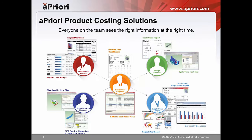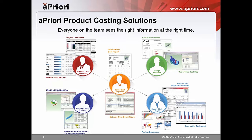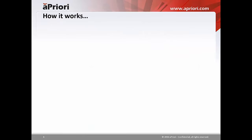aPriori has a product cost management software technology that allows everybody on the team to see the right information at the right time. The types of information a manufacturing engineer or design engineer needs are very different from what a supply chain buyer or product line manager is looking for. aPriori has a database technology that allows everybody to work from the same set of information and present it in a format that's meaningful for them.